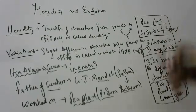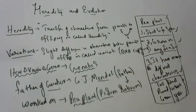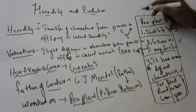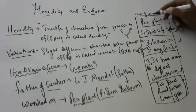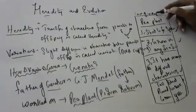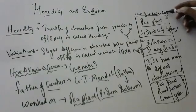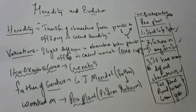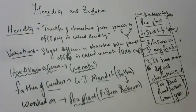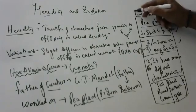He extensively worked on these plants and proposed two famous laws — Mendel's Laws. One is the Law of Independent Assortment, and the other one is the Law of Dominance.